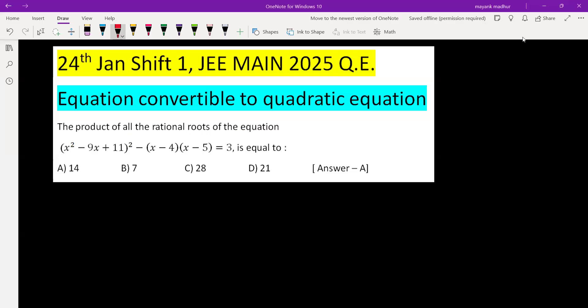The product of all the rational roots of this equation we have to find out. So the equation is (x² - 9x + 11)² - (x² - 9x + 20), and you can bring this 3 on LHS, so minus 3 is equal to 0.